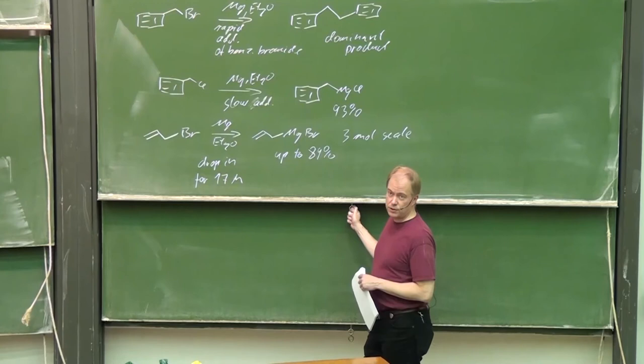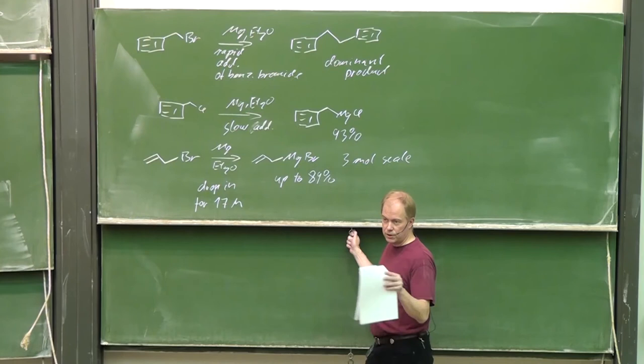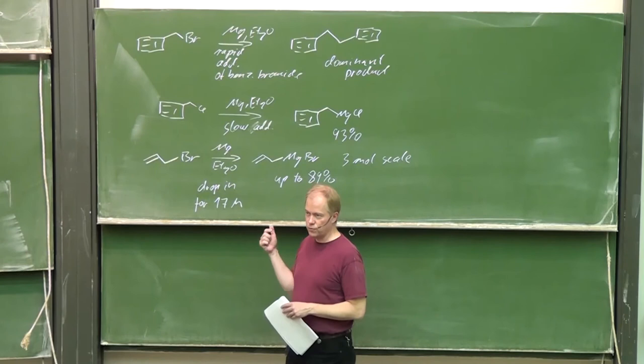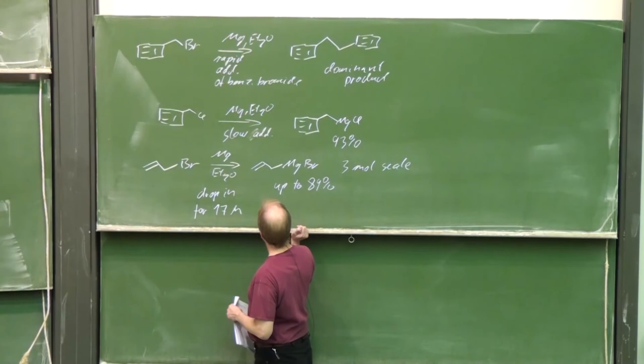In this case, we let it drop in for 17 hours—normally we are not that patient, but this is necessary to get a yield like that. This was state of the art approximately until the year 2000. Then Knochel's group from Munich University offered new ways to get to compounds like that, actually to form sensitive magnesium organic compounds.